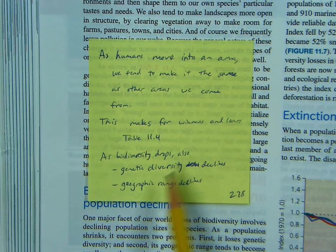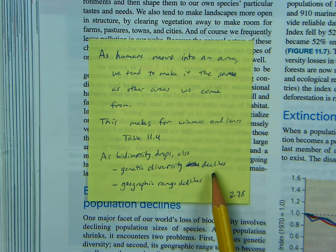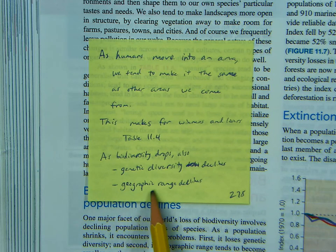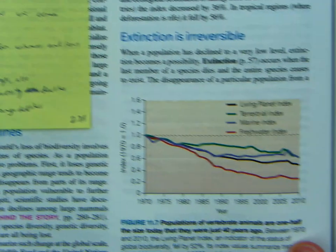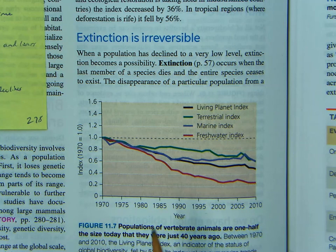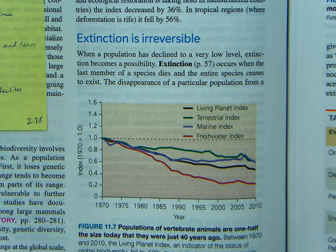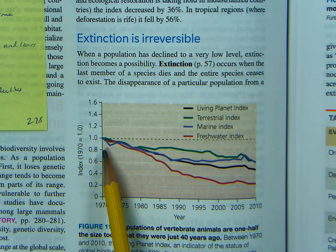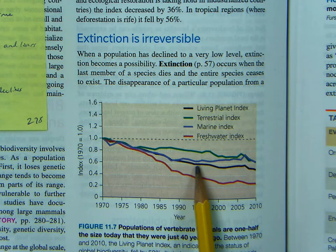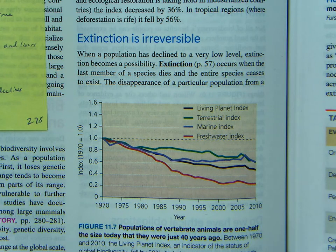As biodiversity drops, genetic diversity is also declining, which is obviously a problem, and the geographic range — like we were talking about with the tiger — is also going to decline. Now this chart here, the Living Planet Index, is an indicator of the status of global biodiversity. You can see it fell by 52%. Everything starts at one, and that black line is basically just dropping because we're making everything go extinct faster and faster.